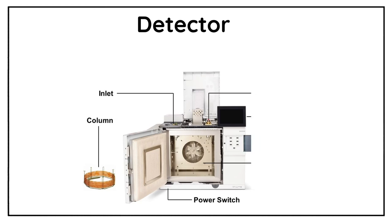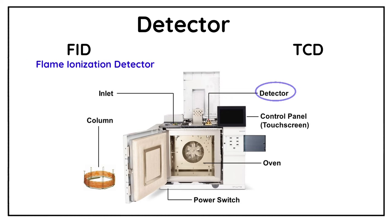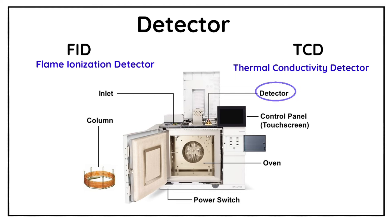Now comes the fourth part of the GC instrument, which is the detector. Mostly GC instruments come with two detectors: FID and TCD. FID means Flame Ionization Detector and TCD means Thermal Conductivity Detector. Both these detectors have different principles of working, which we will discuss in another video.